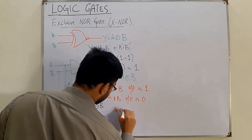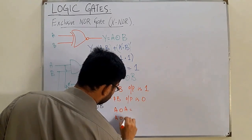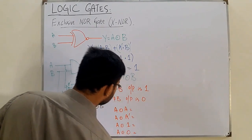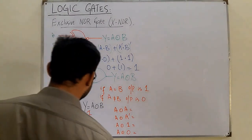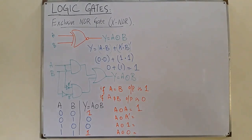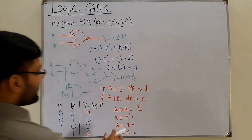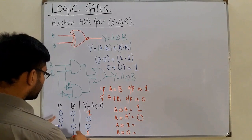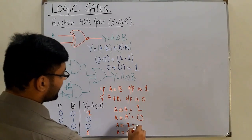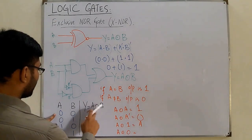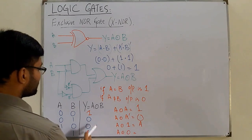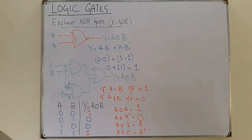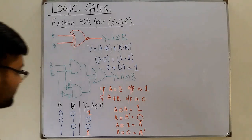Basic properties of XNOR: A XNOR A = 1, since both are equal. A XNOR A_complement = 0, since 0 XNOR 1 = 0 in both cases. A XNOR 1 = A, since 0 XNOR 1 = 0 and 1 XNOR 1 = 1. A XNOR 0 = A_complement, since 0 XNOR 0 = 1 and 1 XNOR 0 = 0.